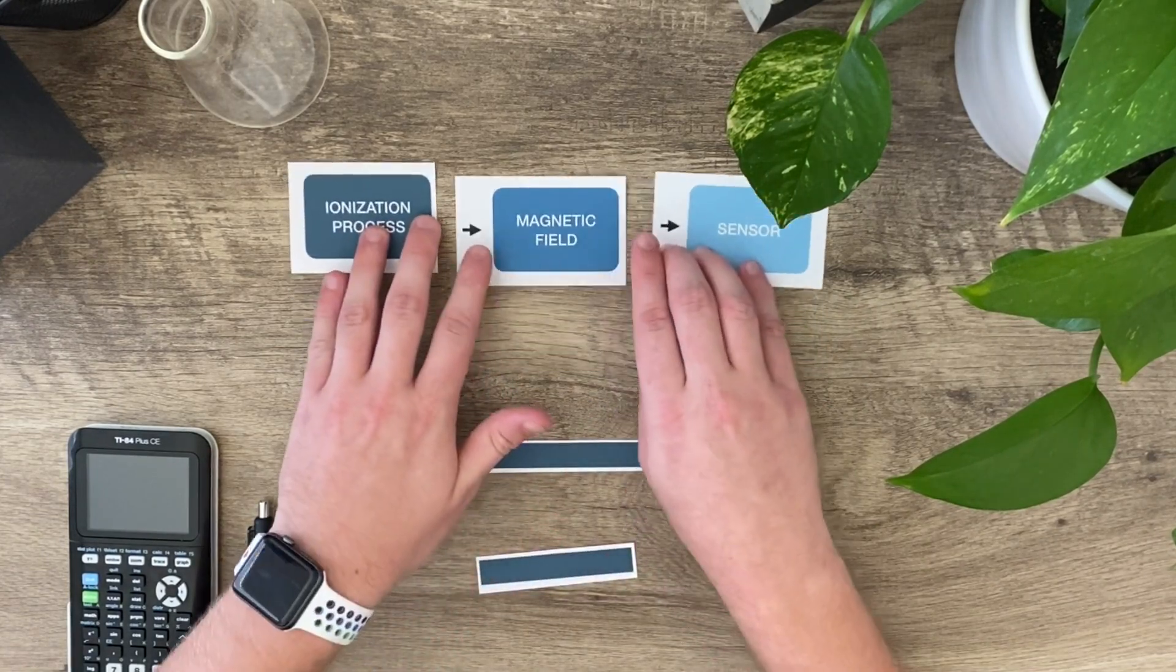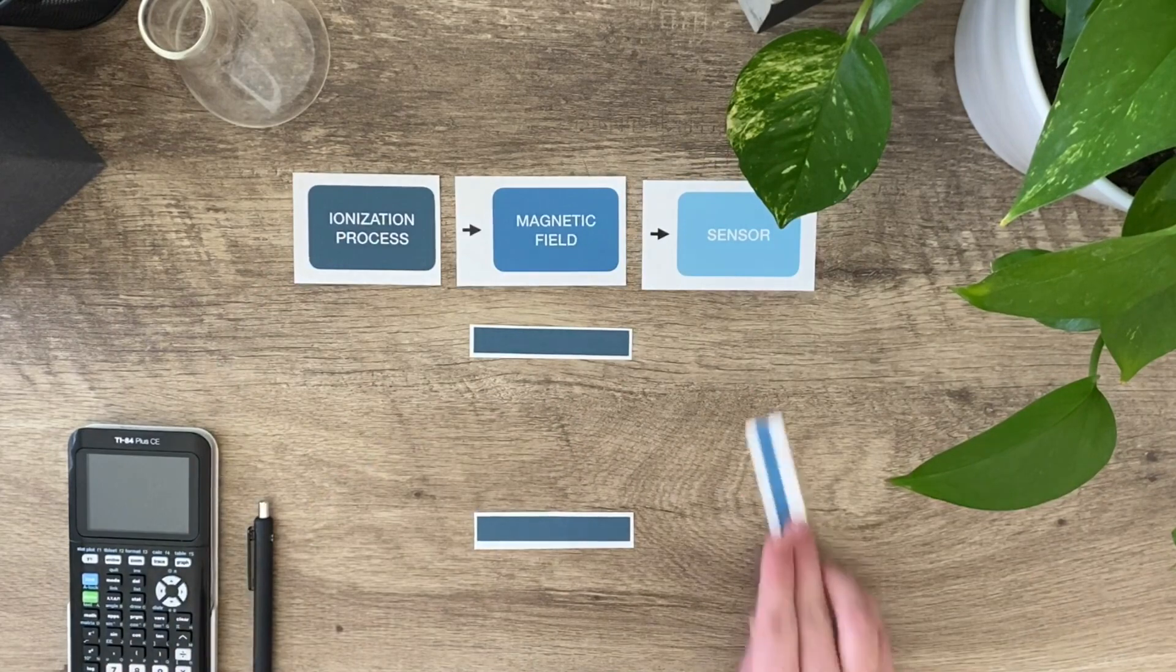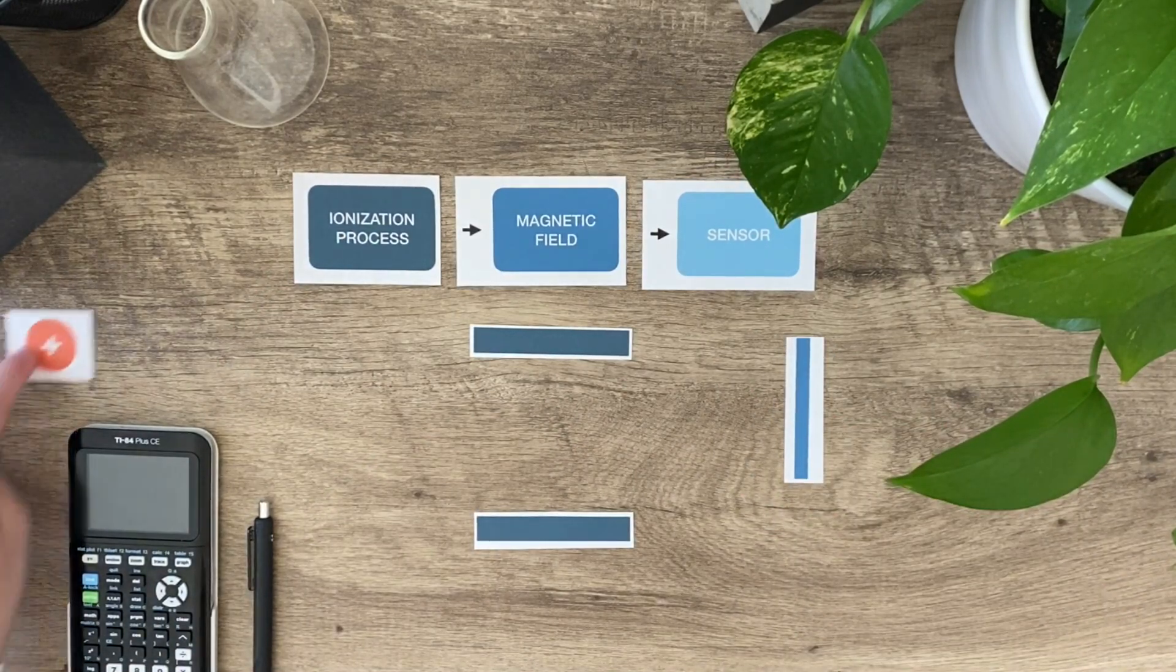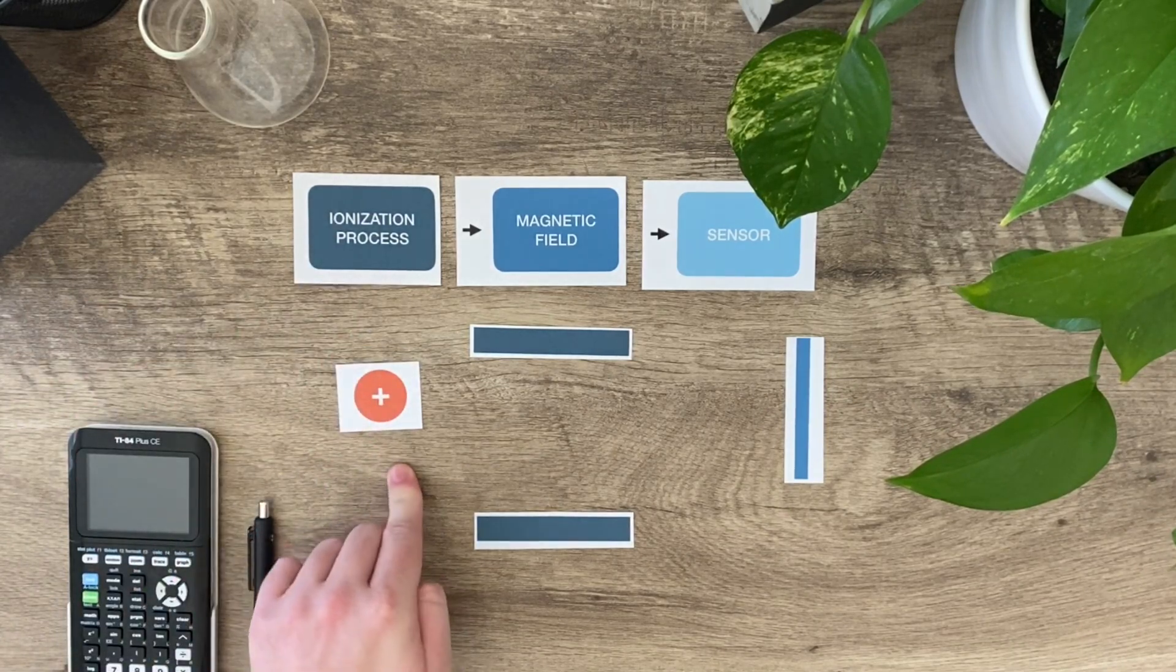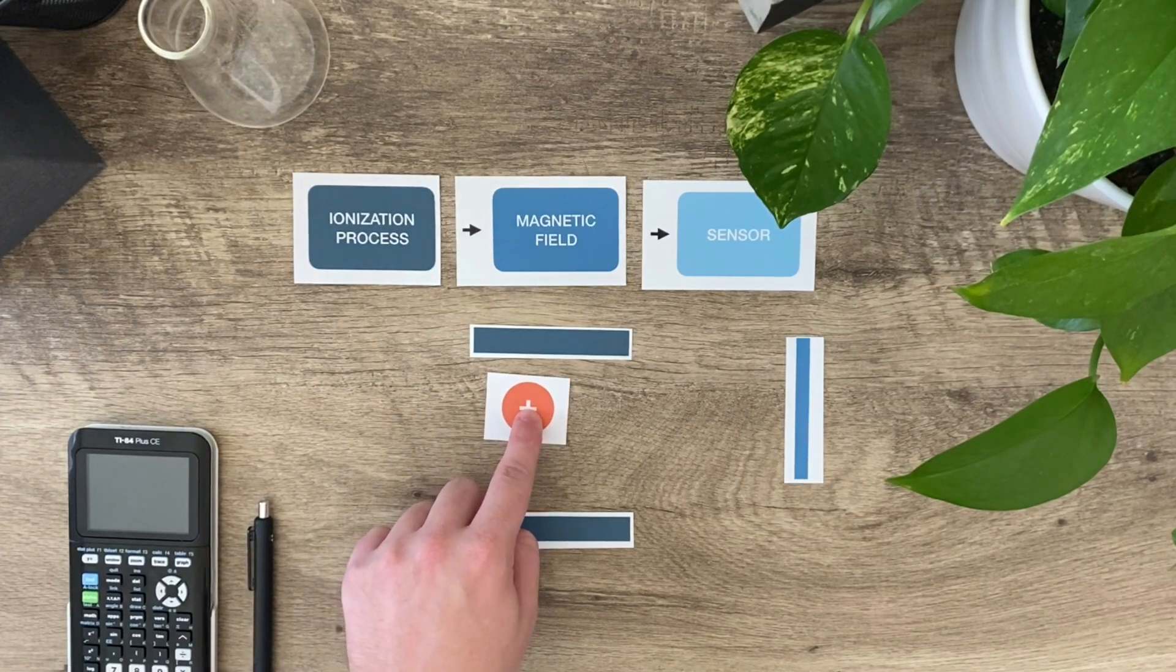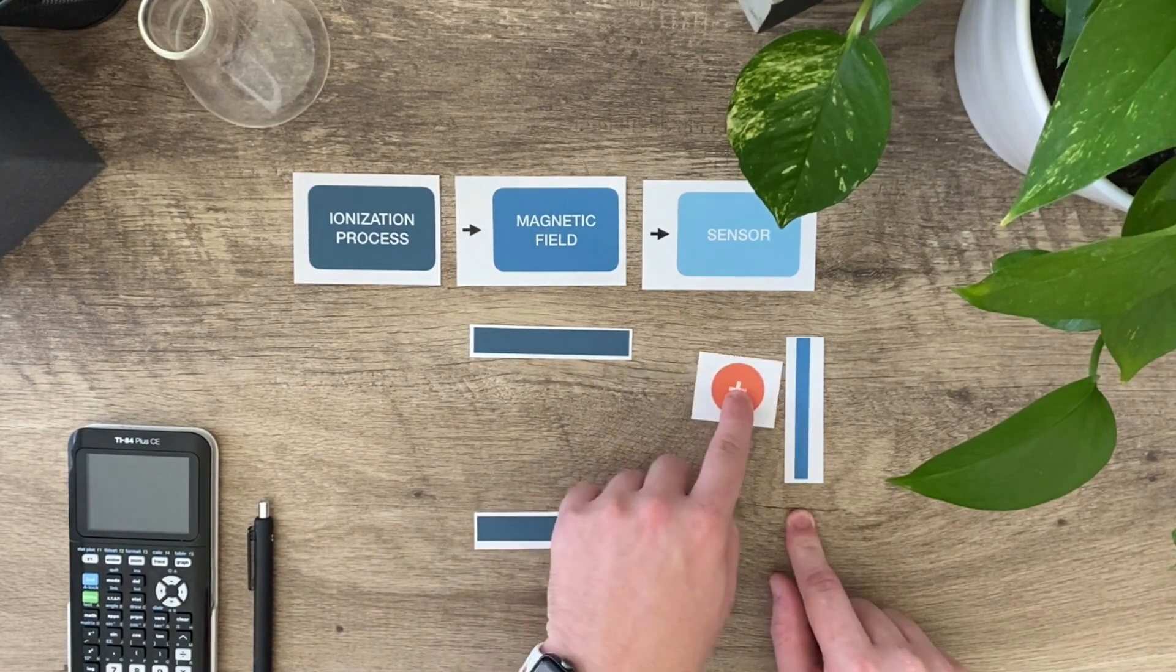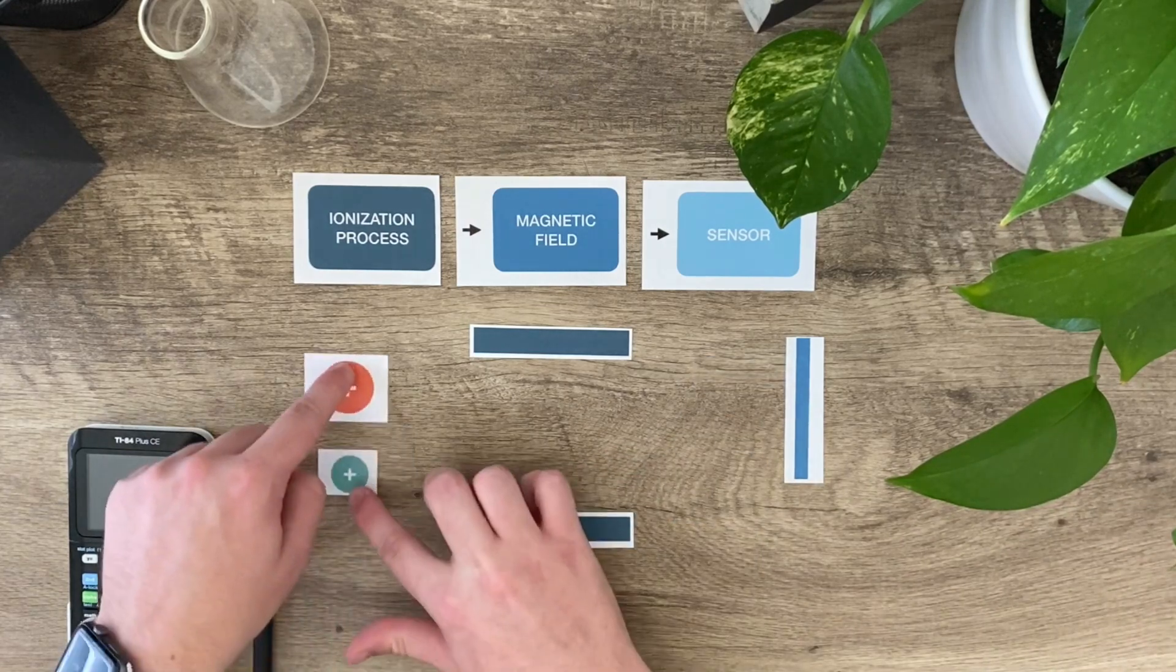To help illustrate that, I have a few little things here to show you what I mean. A magnetic field, I've got a sensor over here. The molecule is going to come in through ionization, after ionization it's going to have a positive charge and look like a cation. As it travels through the magnetic field, the magnetic field is going to deviate its path based on how big it is, and then it's going to be attracted to this negatively charged sensor plate where it collides.